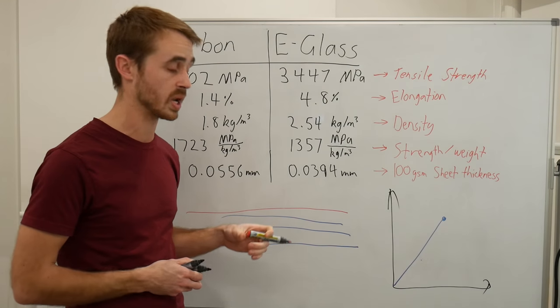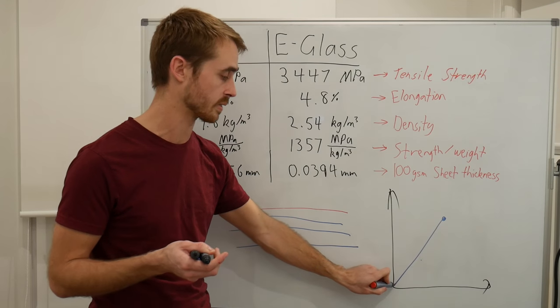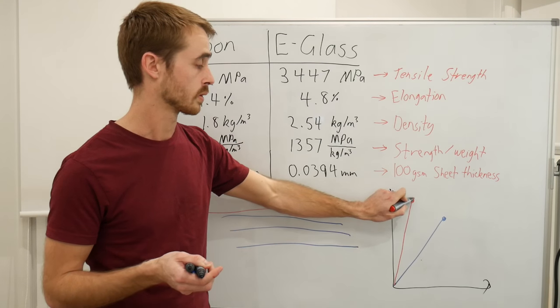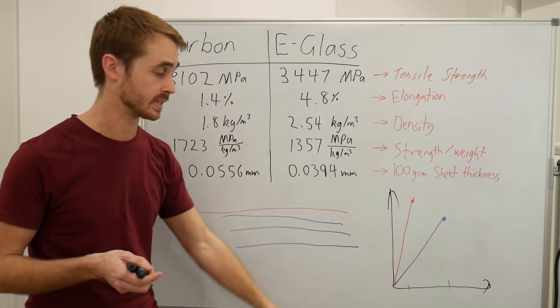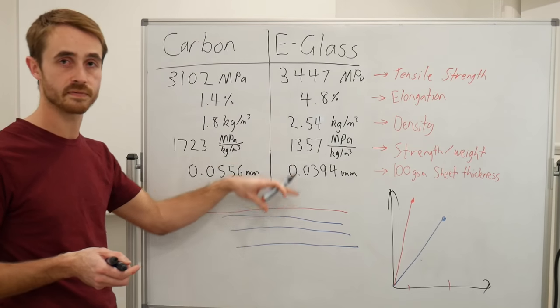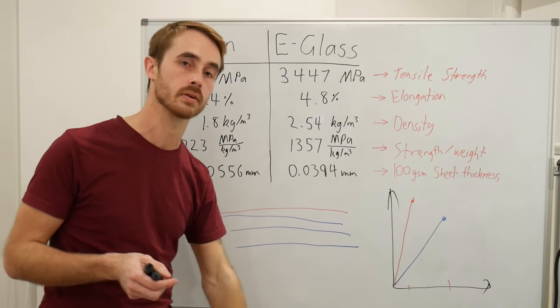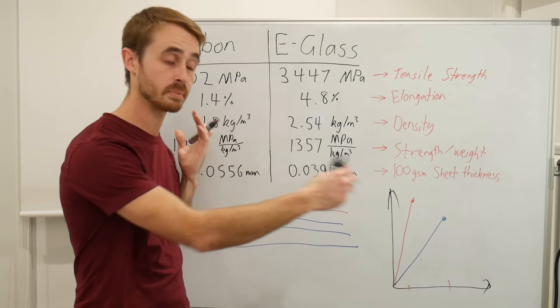I'm going to do this on a strength to weight basis because we're talking strength to weight here. Carbon fiber has effectively a higher strength but it still extends exactly the same amount. This is still going to be 1.4% and that's still going to be 5%. It doesn't matter how many layers of carbon you put here - 500 layers of carbon, it's still going to snap at 1.4%. 500 layers of fiberglass, still only snaps at 4.8%.